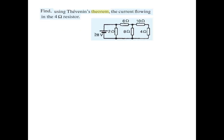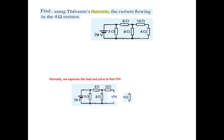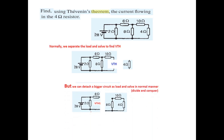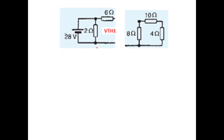In this lesson we'll learn another technique for solving Thevenin's theorem. We need to find the current flowing through the 4 ohm load resistor. In the technique learned so far, we separated the load resistance and solved for V_Thevenin and R_Thevenin. In this new technique, called the divide and conquer technique, we don't separate only the load resistance — instead we separate a major part of the circuit, treating it as the load. So instead of separating just the 4 ohm resistance, we separate a whole larger part, and solve for V_Thevenin and R_Thevenin on the remaining part.